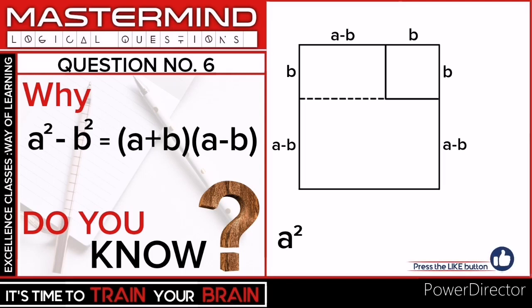Now tell me, what is the area of this square? Students, the side of this square is b, so the area will be b².